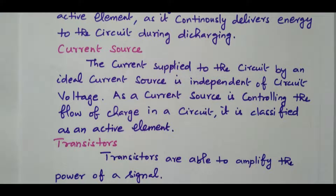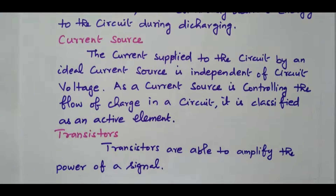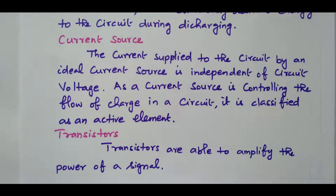Then the transistor. Transistors are able to amplify the power of a signal, so they are also called active components. The transistor is one of the main components in amplifiers — transistors are able to amplify the power, and that is why they are called active elements.